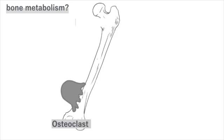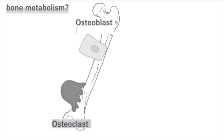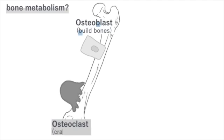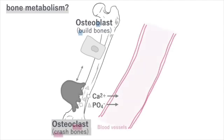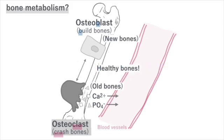The main characters are osteoblasts and osteoclasts. Osteoblasts build bones, while osteoclasts break down bones. Healthy bones are maintained by the balance of breaking down old bone and building new bone.